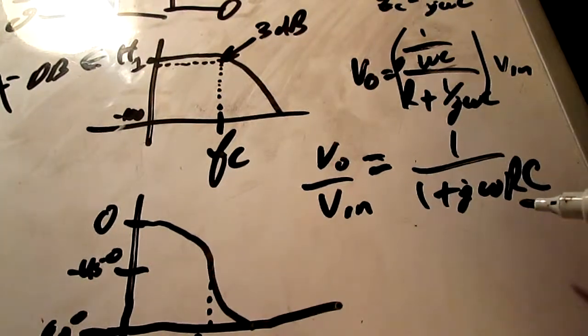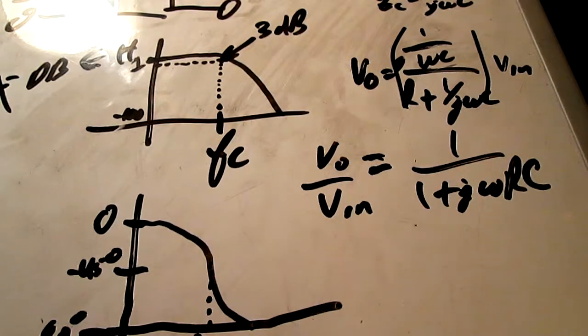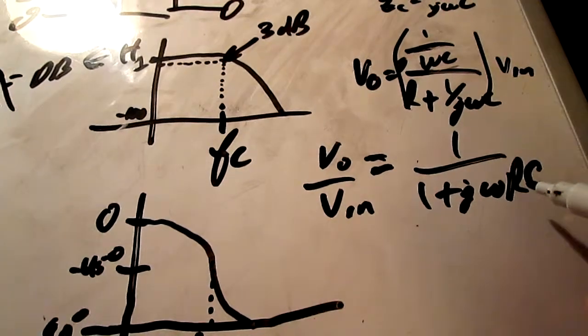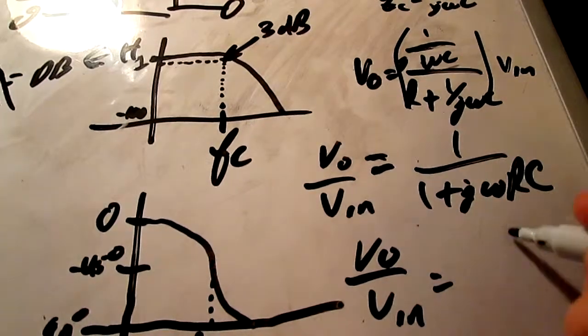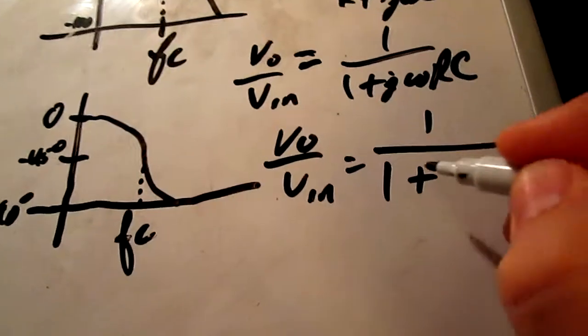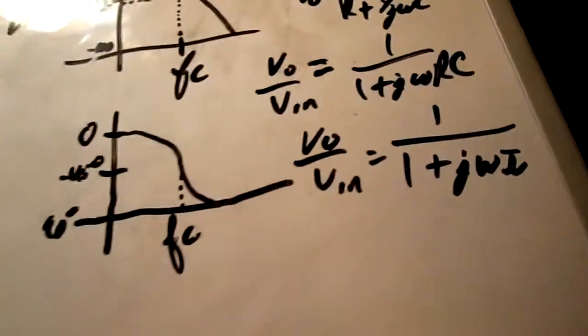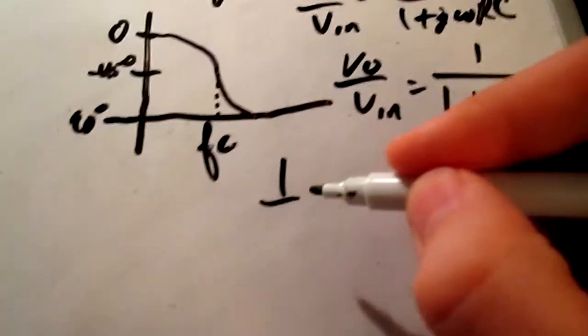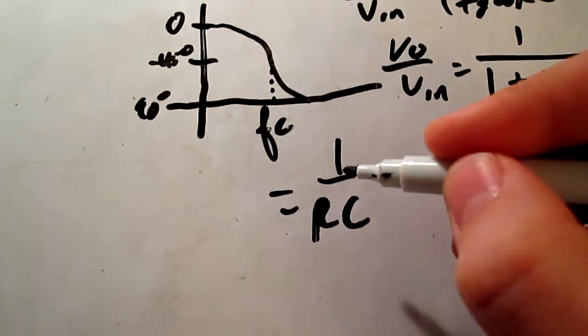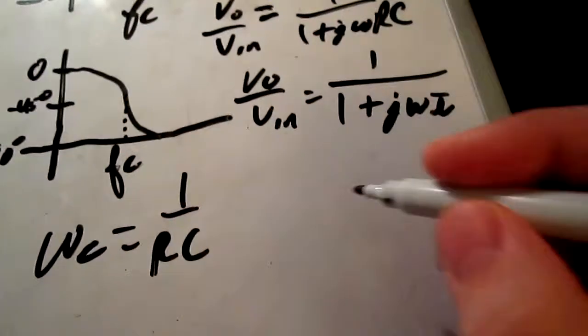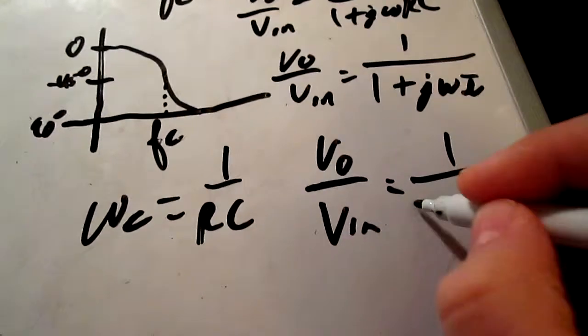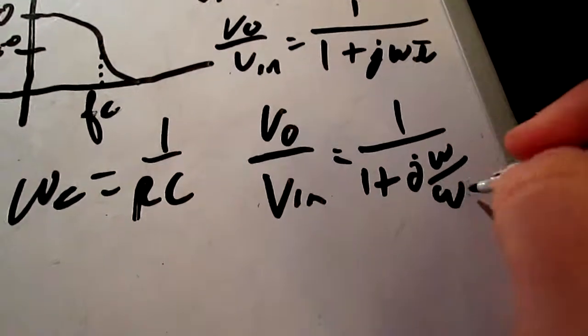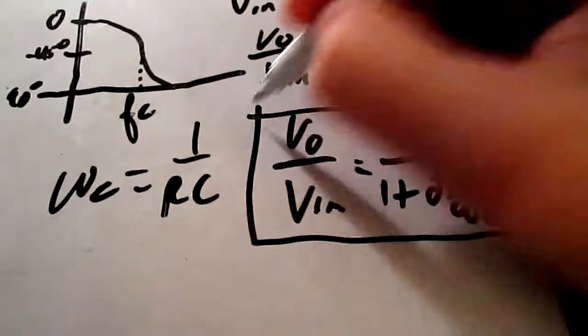Remember that r c is equal to tau, so V out over V in is equal to 1 over 1 plus j omega tau. Tau being r c, and remember what I told you earlier, 1 over r c is equal to omega c. So you can see here, V out over V in is equal to 1 over 1 plus j omega over omega c. That's our transfer function.